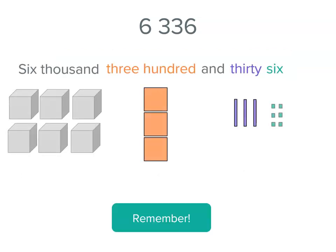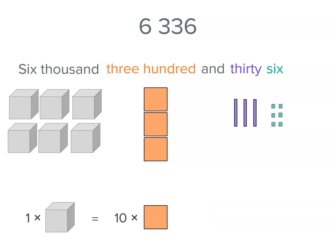Now remember, when we have place value models like this, it helps us to see how we can actually rename or regroup things because we could take one of those thousands and trade it for 10 of the hundreds.